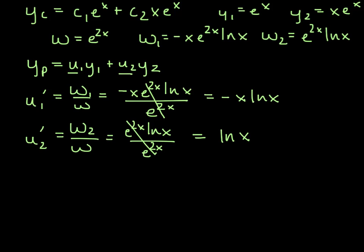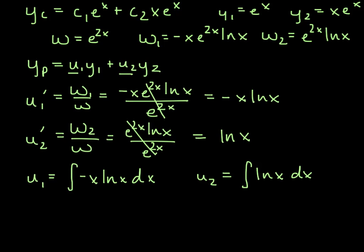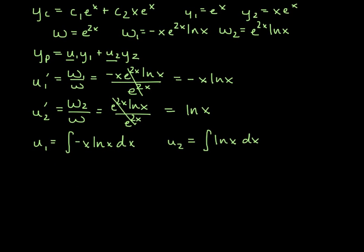So now to find u1 and u2, we need to integrate. So in other words, u1 is going to equal the integral of negative x ln x dx, and u2 is going to equal the integral of ln x dx. Both of these we would want to do by parts, the integration. I'll go ahead and skip that step here, and we'll assume you're okay integrating by parts. If not, check out the videos. So u1 is going to equal negative x squared over 2 ln x plus x squared over 4, and then u2 is going to be x times the ln of x minus x.